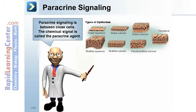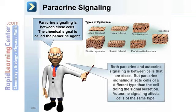Paracrine signaling occurs between close cells, and the chemical signal is called the paracrine agent. Both paracrine and autocrine signaling occur between nearby cells, but paracrine signaling affects cells of a different type than the secreting cell, while autocrine signaling affects cells of the same type.